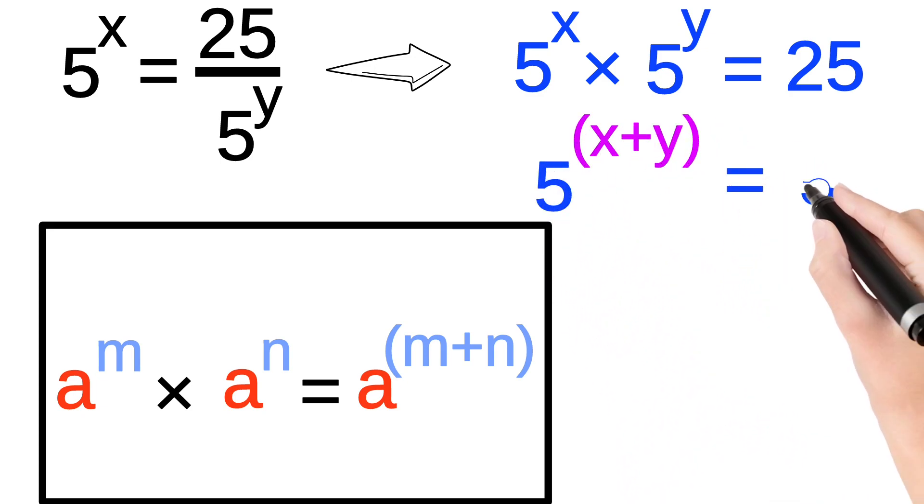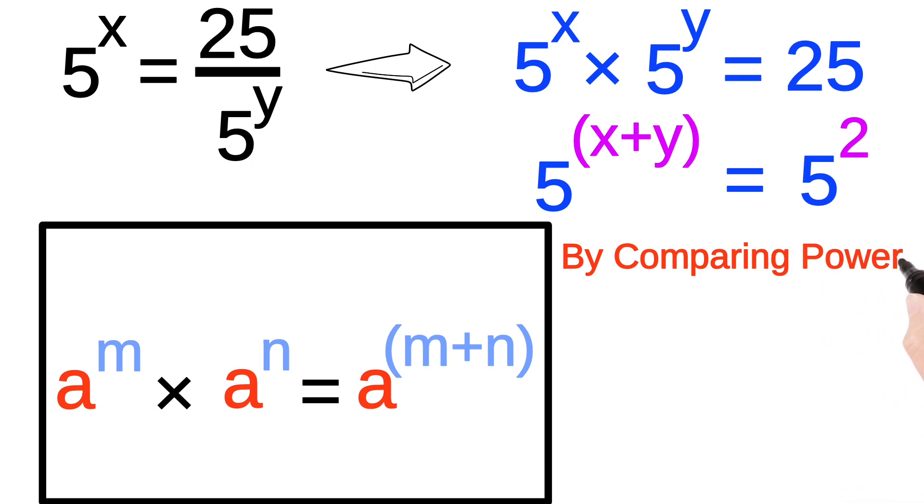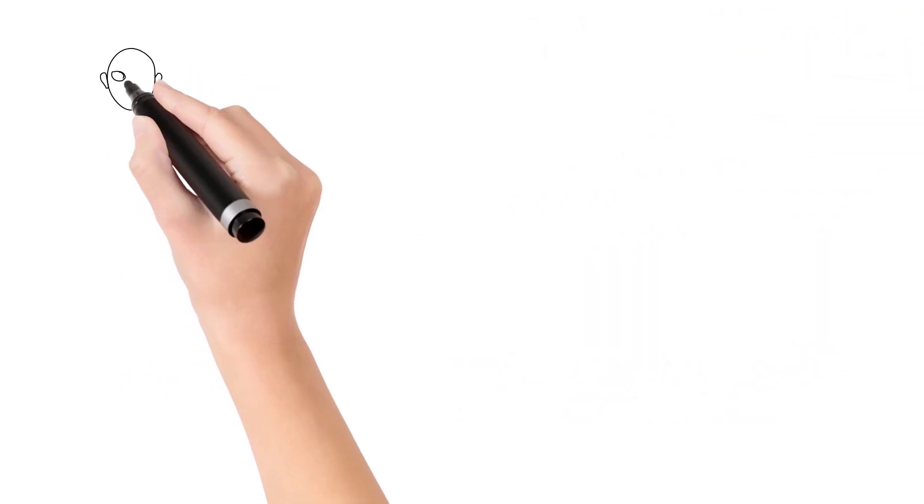Since 25 equals 5 to the power of 2, by comparing powers we get x plus y equals 2, which is the required answer to the question. Now it's time to tell you the names of those who gave the correct answer.